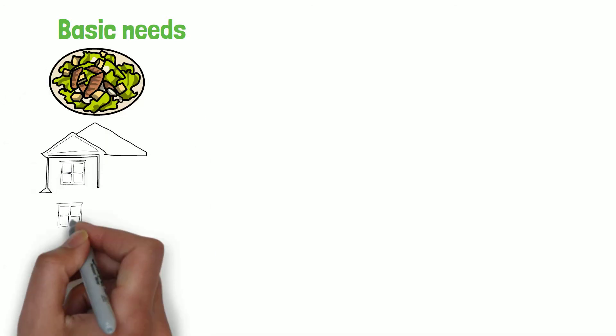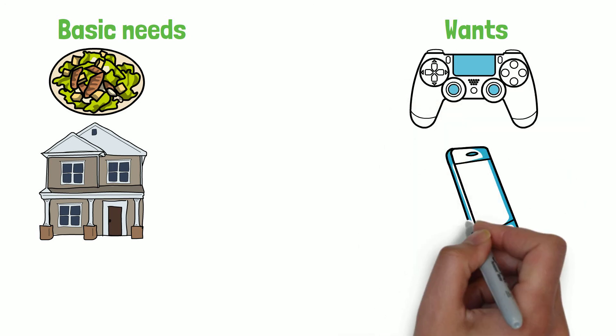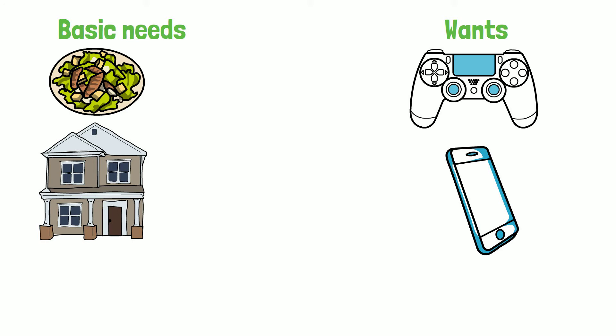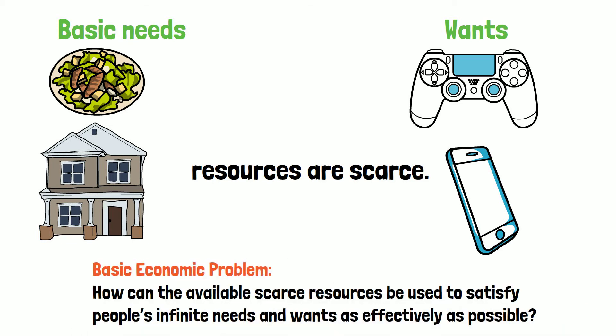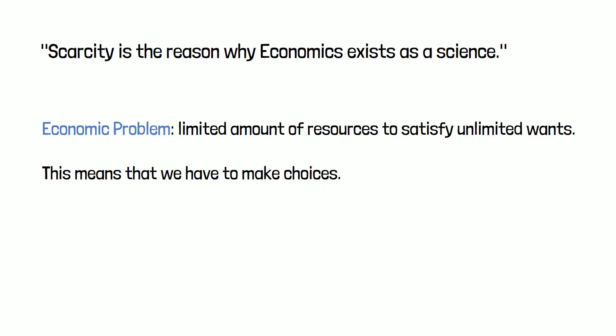Everyone has certain basic needs in life: food, a place to live. Everyone also has an infinite list of things they want — the new PS5, the new iPhone, holidays or houses. However, there is a limited amount of resources available to satisfy these needs and wants, because resources are scarce. These facts lead to the basic economic problem: how can the available scarce resources be used to satisfy people's infinite needs and wants as effectively as possible? Scarcity is the reason why economics exists as a science. The main economic problem is the fact that there is a limited amount of resources to satisfy unlimited wants, which means that we have to make choices.